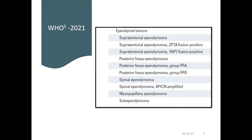According to the WHO 5th edition 2021 classification, ependymal tumors are classified into: supratentorial ependymoma RELA fusion positive; supratentorial ependymoma YAP1 positive; posterior fossa ependymoma group A and group B; spinal ependymoma MYCN amplified; myxopapillary ependymoma; and subependymoma.